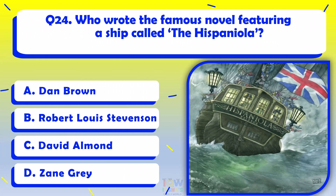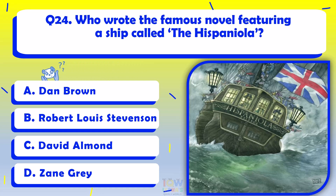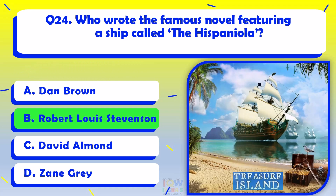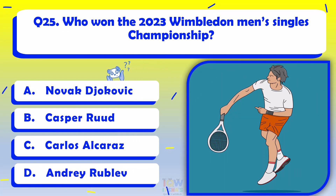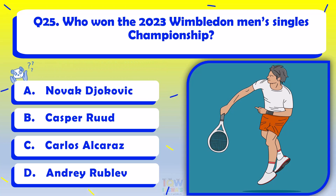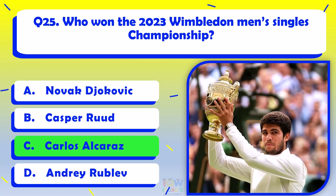Who wrote the famous novel featuring a ship called the Hispaniola? Robert Louis Stevenson. Who won the 2023 Wimbledon Men's Singles Championship? Carlos Alcaraz.